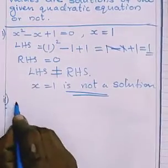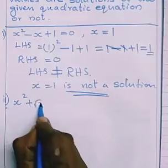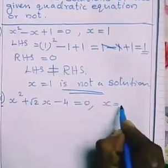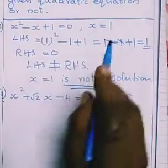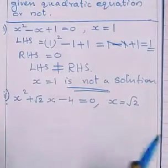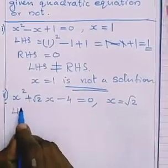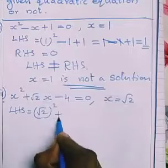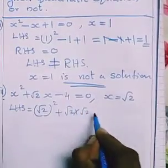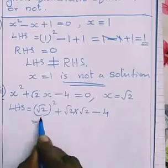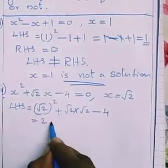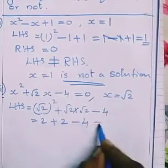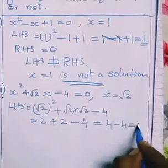Second question: x² + √2·x - 4 = 0. The value of x is given as √2. We need to check whether this value is a solution or not. Substituting in the LHS with x = √2: (√2)² + √2·√2 - 4. What is (√2)²? That is 2. So 2 + √2·√2 - 4, which gives 2 + 2 - 4.